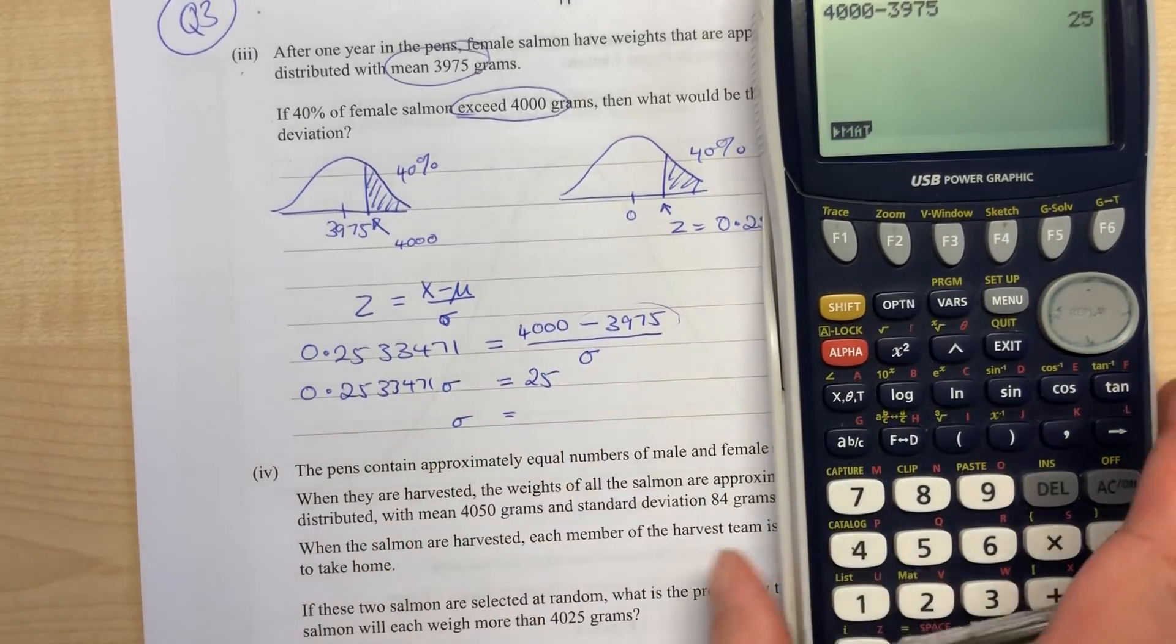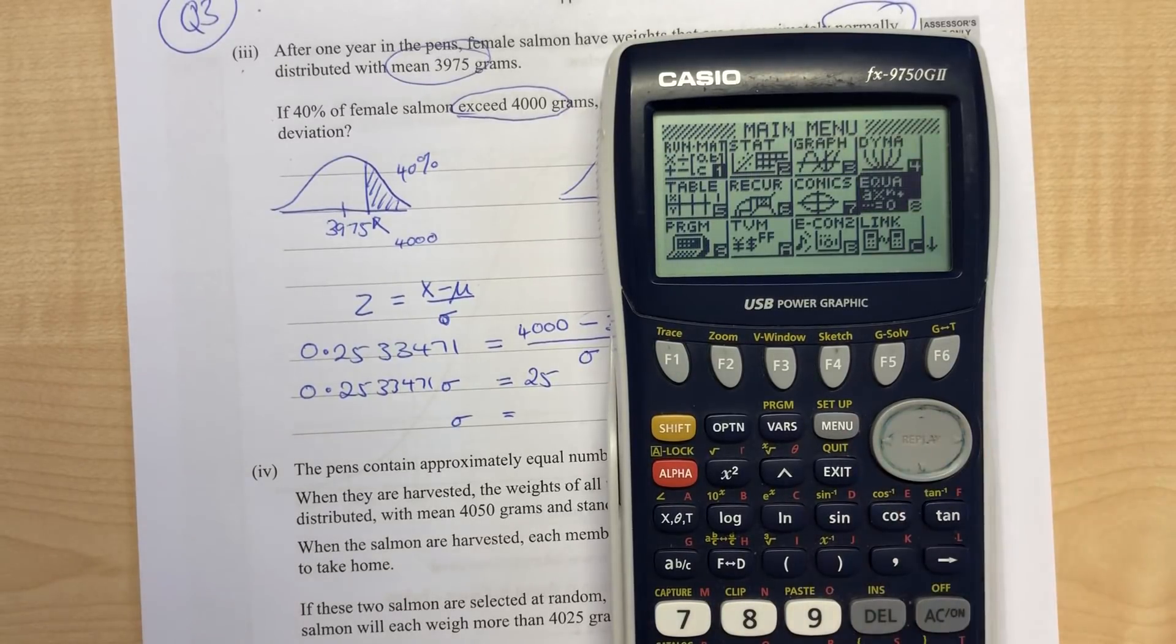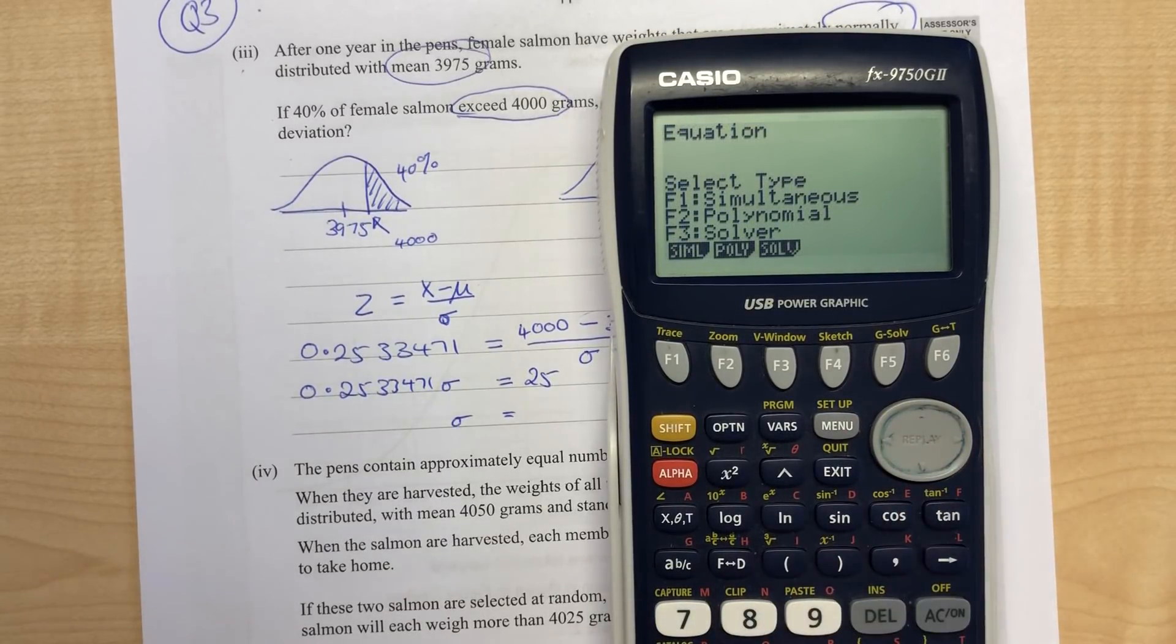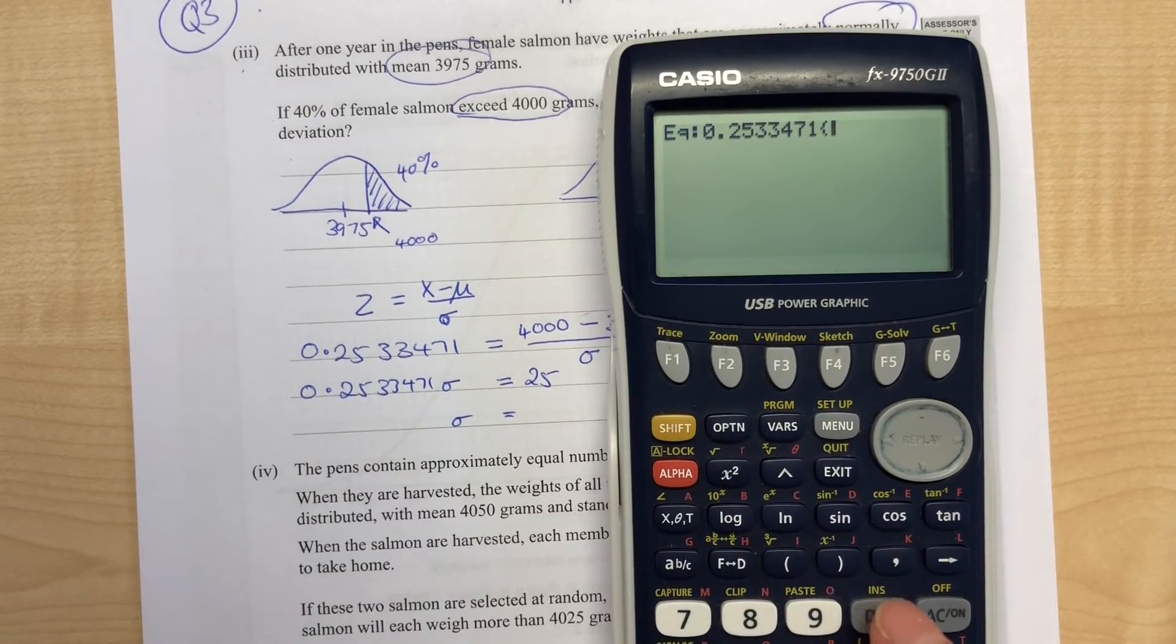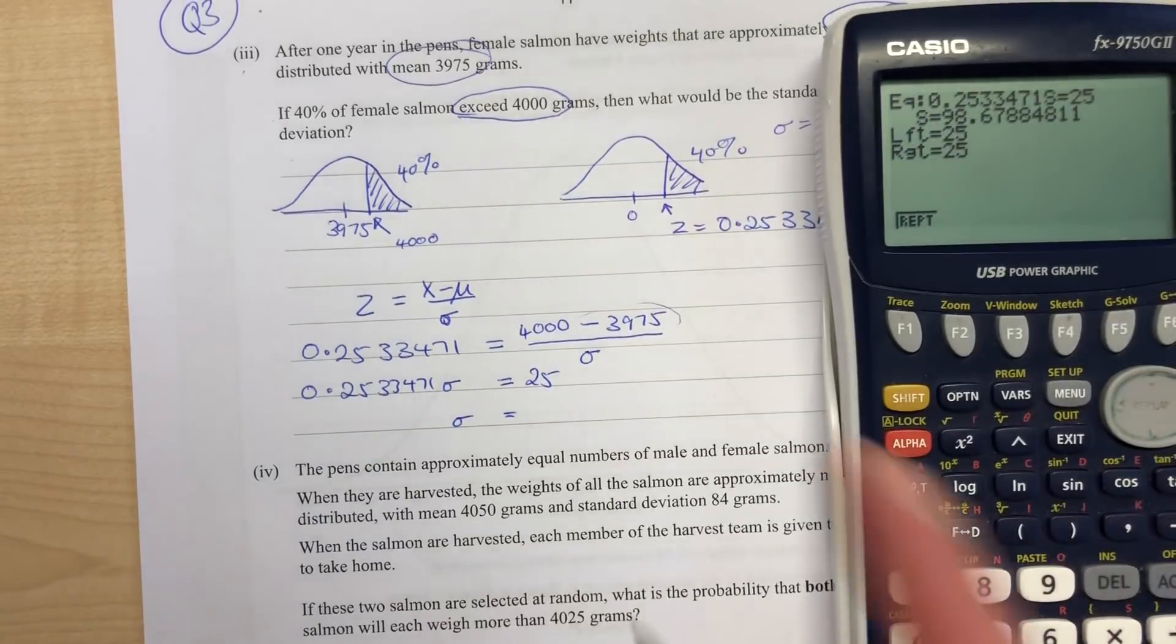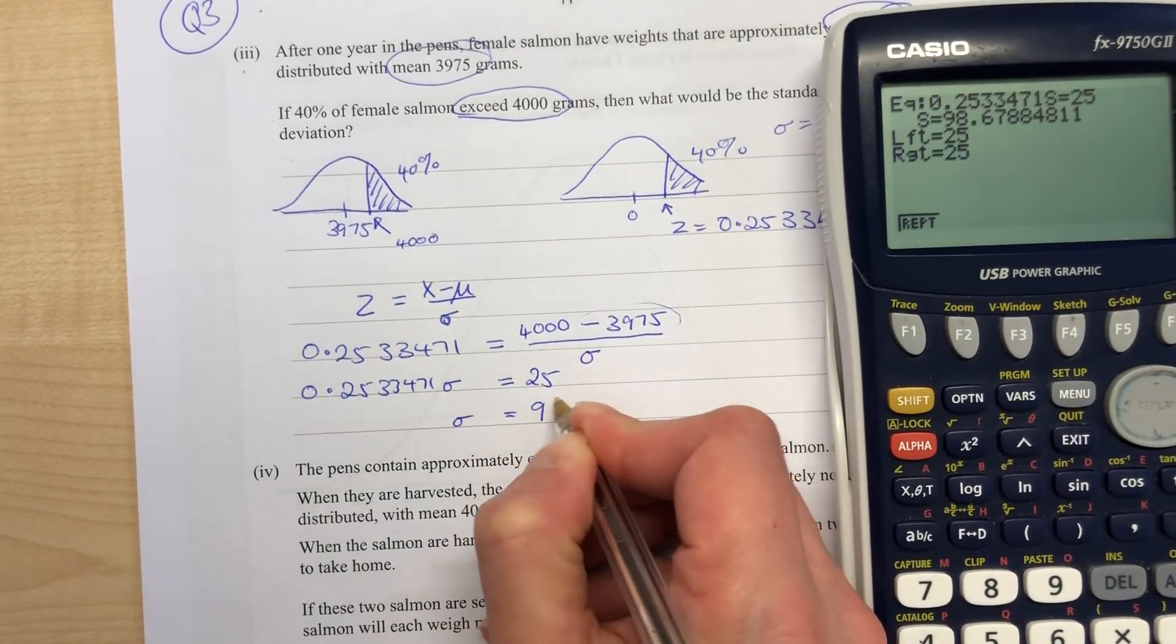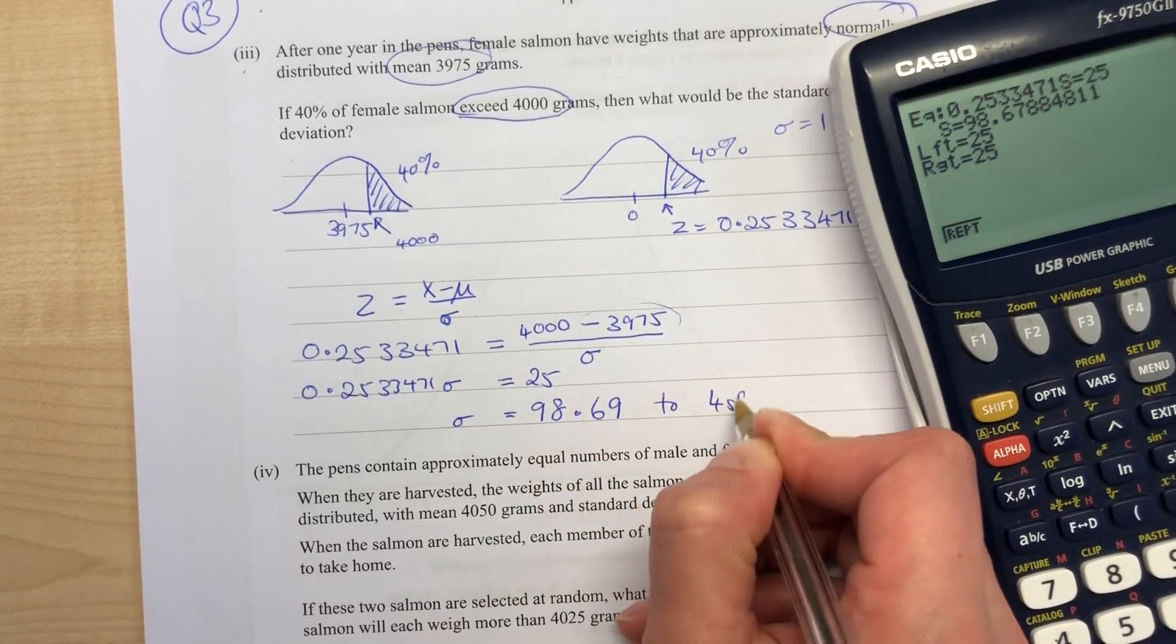So sigma is, you can either do a straightforward calculation or if you're not so confident, put it into equation solver. So 0.2533471 times S equals 25, and then solve it. Sigma is 98.69 to 4 significant figures.